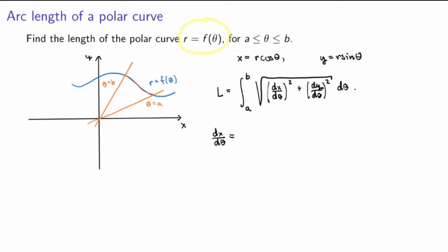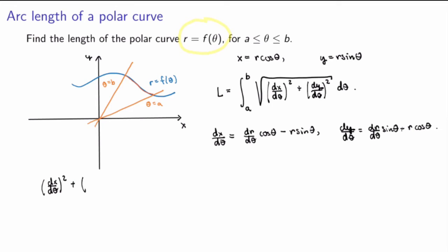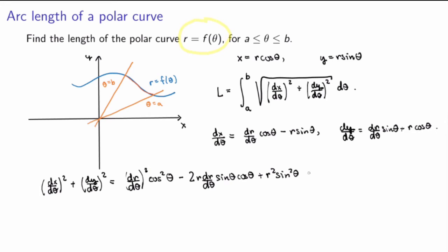dx/dθ is given by applying the product rule to r·cosθ, so we get (dr/dθ)·cosθ minus r·sinθ. For dy/dθ we apply the product rule to r·sinθ, getting (dr/dθ)·sinθ plus r·cosθ. Now I can compute what's inside the square root by squaring these expressions and adding them. For the square of the first term I get (dr/dθ)²·cos²θ, then the cross term minus 2r·(dr/dθ)·sinθ·cosθ, and then plus r²·sin²θ.